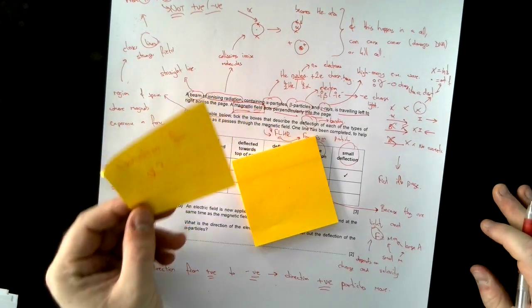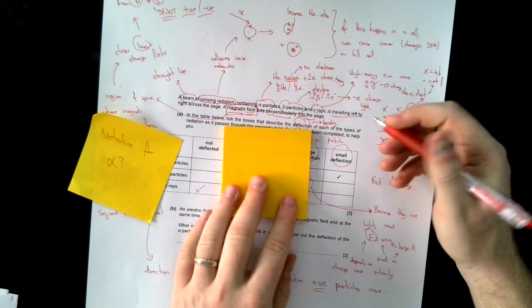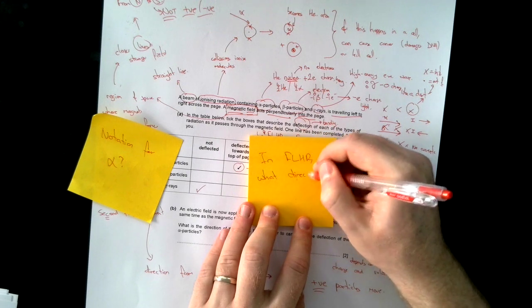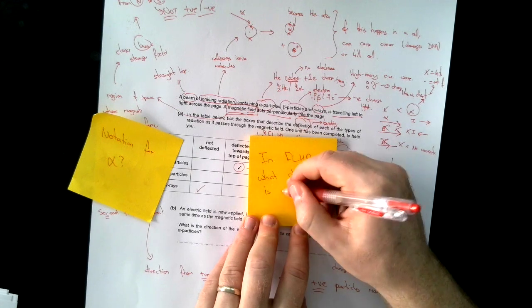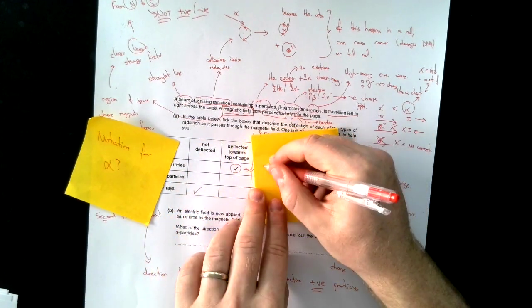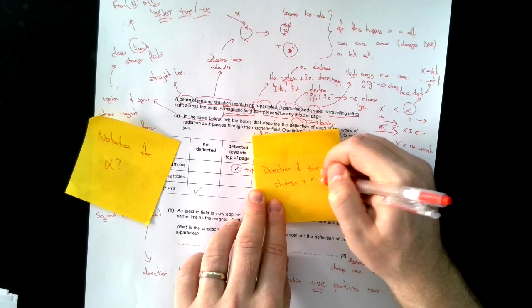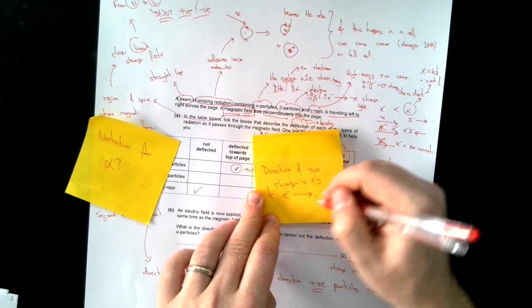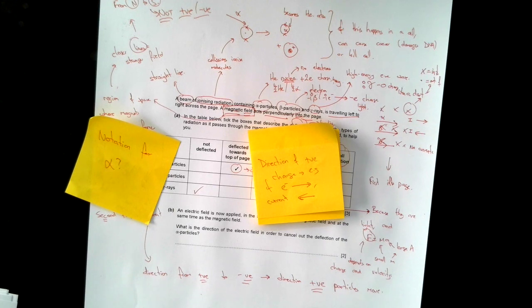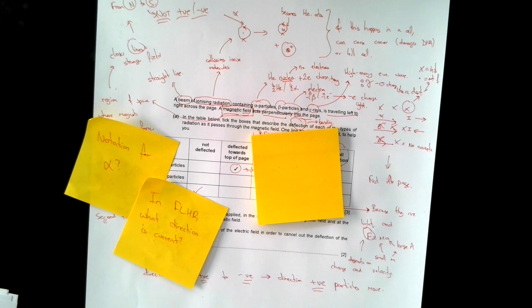For instance, that's going to be my flashcard. So in the future, I'm going to go through and say, what is notation for alpha? Do I remember what it is? Okay, yes, I was right. Move on. I could say, in Fleming's left-hand rule, what direction is current? So I would turn this note here into a card. So I would say, direction of positive charge. For example, if an electron is going that way, current is going that way. It doesn't take long to make these flashcards, but when you use them for your revision, they're going to be really, really helpful for just saying, do I remember all these key facts? Okay?